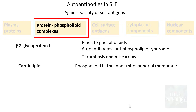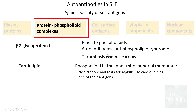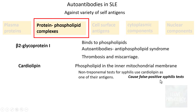Cardiolipin is a phospholipid in the inner mitochondrial membrane. If a patient has autoantibodies against cardiolipin, this causes thrombosis, but importantly these patients give false positive syphilis test results. Non-treponemal tests for syphilis use cardiolipin as one of their antigens, so if the patient has anti-cardiolipin antibodies the test turns positive — a false positive, because the patient has the antibody but not syphilis.